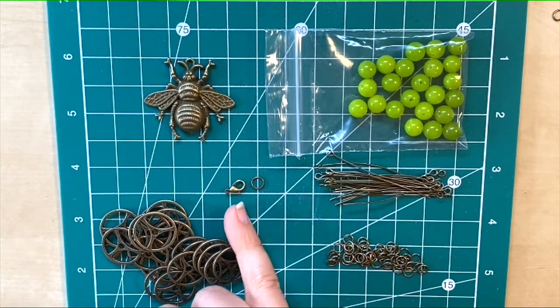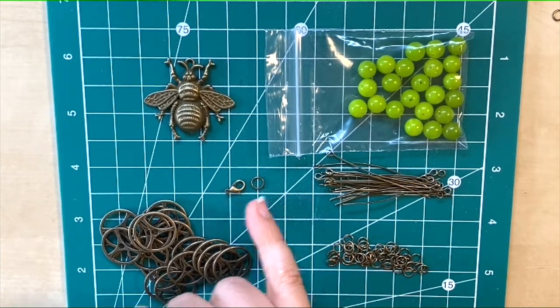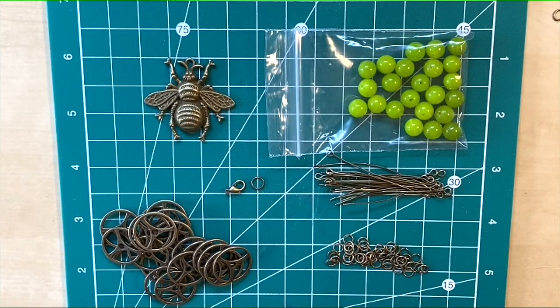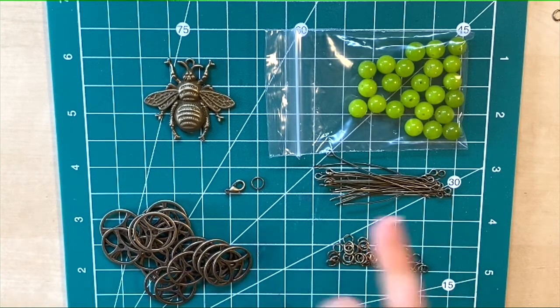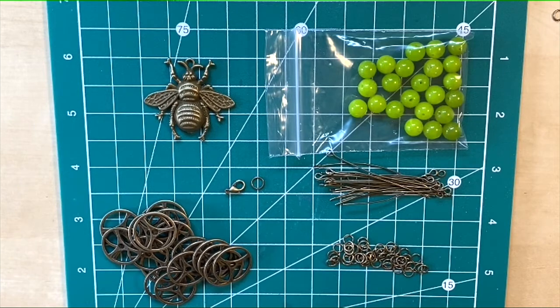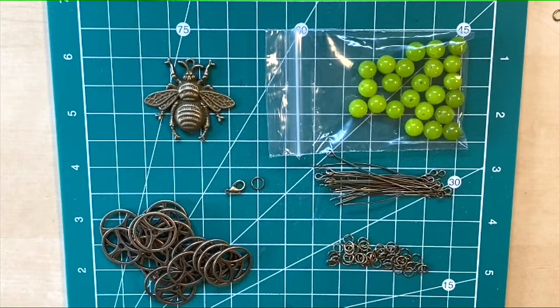When you receive the pack, make sure you go through and pull out the one jump ring that's slightly bigger because you're going to need that with your lobster clasp for fixing at the end of your necklace. If anything hasn't arrived in your pack, please let me know immediately and I will send it out.